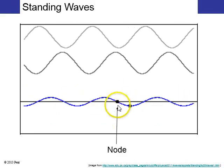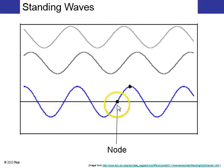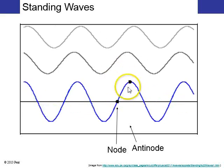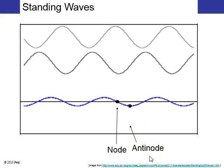And standing waves are characterized by points where nothing moves, that's called a node, and points where it moves at its maximum amplitude, that's called an anti-node.